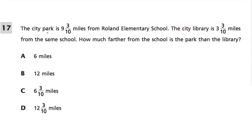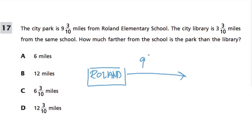In this problem, we're told that the city park is 9 and 3 tenths miles from Rowland Elementary School. So let's just sketch this out. We have Rowland Elementary School here, and if you travel 9 and 3 tenths miles, you go from the school to the city park. So that's our distance there.